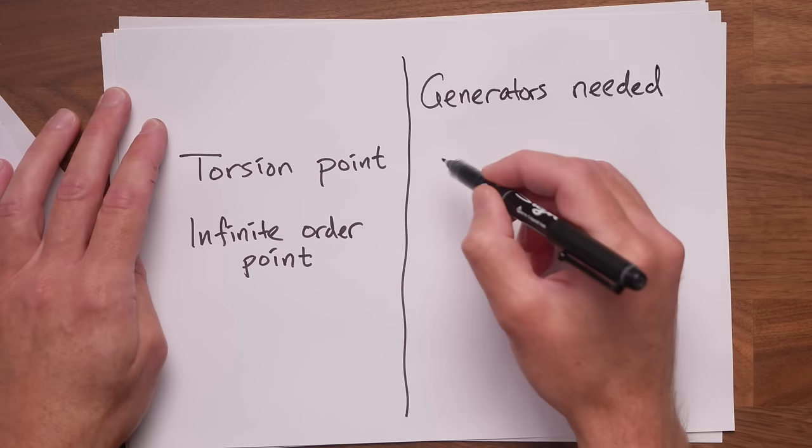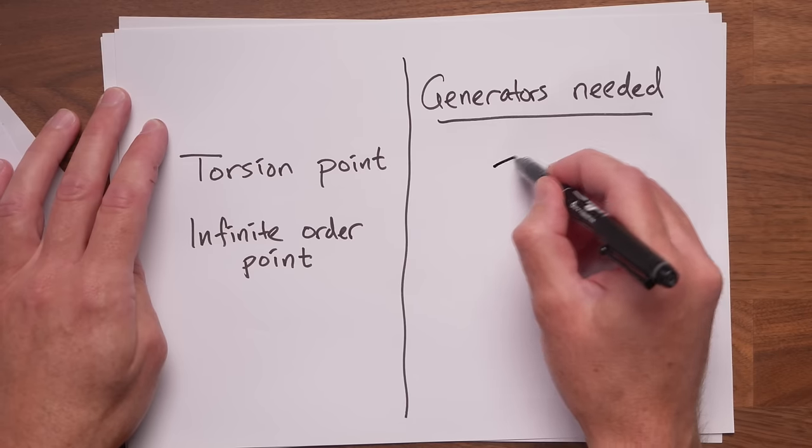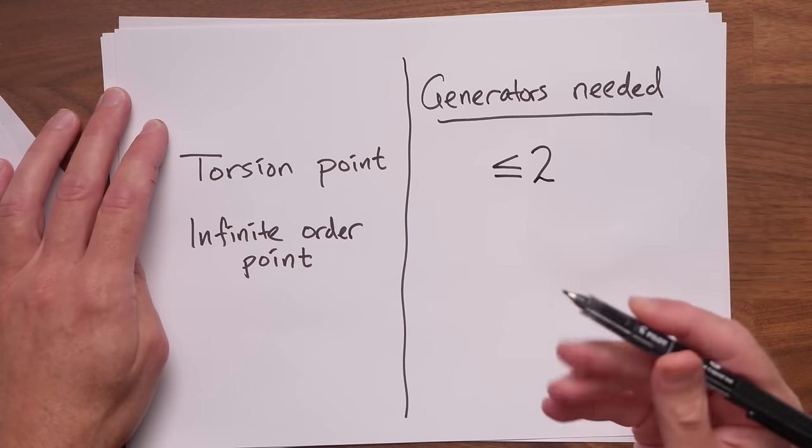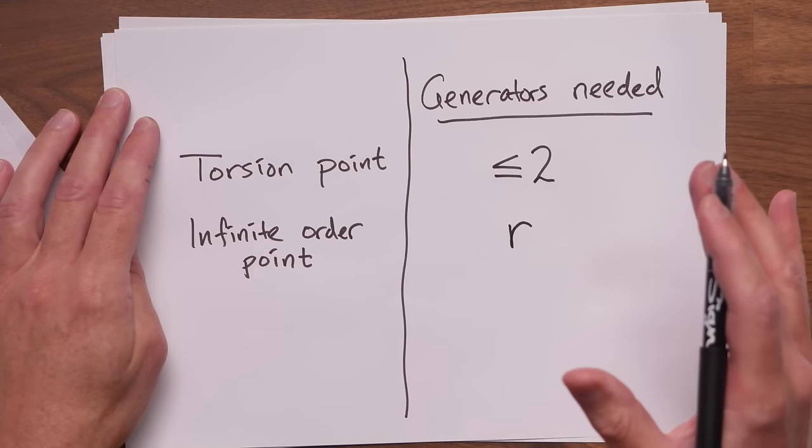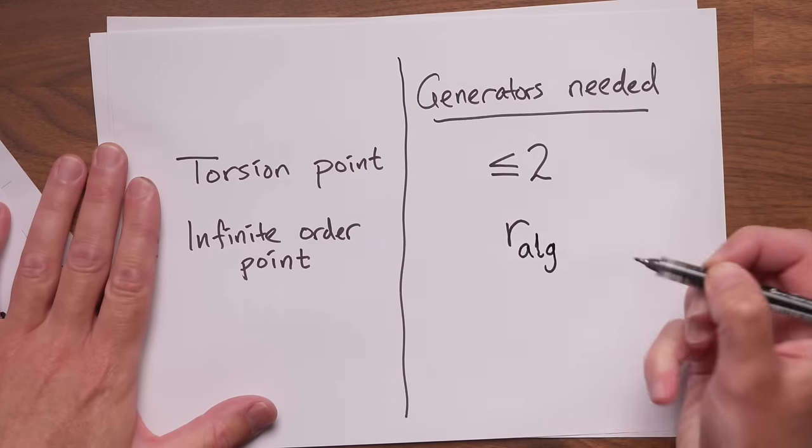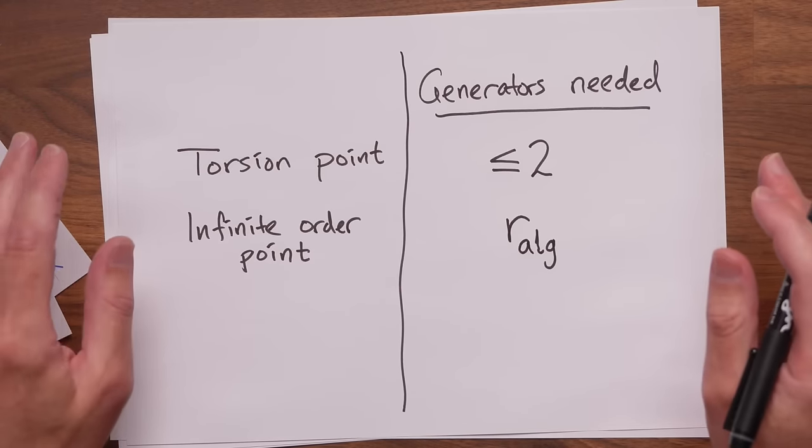Now, the question is, how small can you make this set? Like is one point enough? Or do you maybe need 7 to generate all the others? Well, that number depends on the elliptic curve. But it's known that for any given elliptic curve, you need at most two torsion points and then some number, say R, of infinite order points. And this, the number of infinite order generators, this number is called the algebraic rank of the elliptic curve.